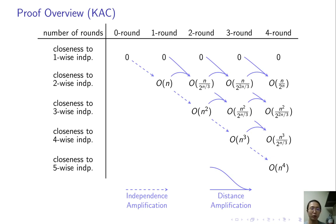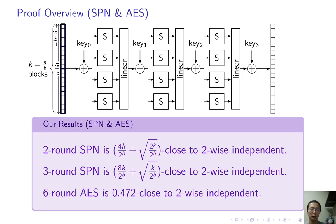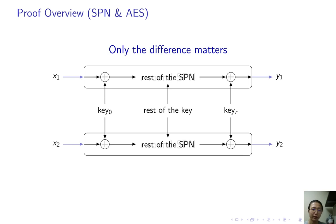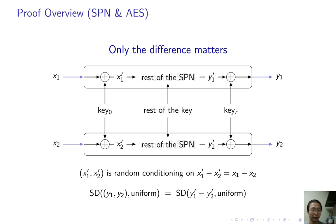Next, I'm going to show how SPN and AES are close to two-wise independence. Because this involves only two inputs, a nice observation is that only the difference matters here. What does that mean? Let me open the SPN for a bit. If we feed two inputs into SPN, after XORing the first round key, the only remaining information is their difference, right? Similarly, for output, we care about the distribution of the two outputs. The joint distribution of the two outputs is close to uniform if and only if the difference is close to uniform. So we only need to care about the difference.